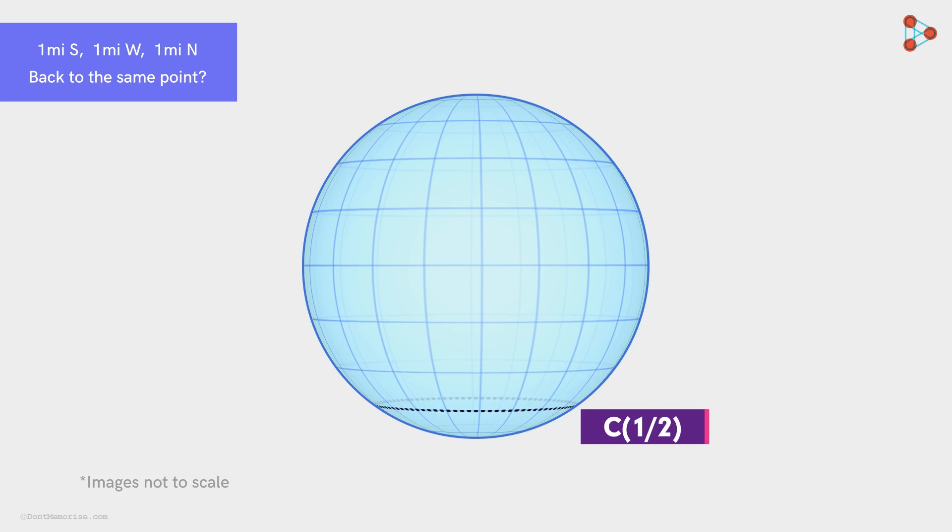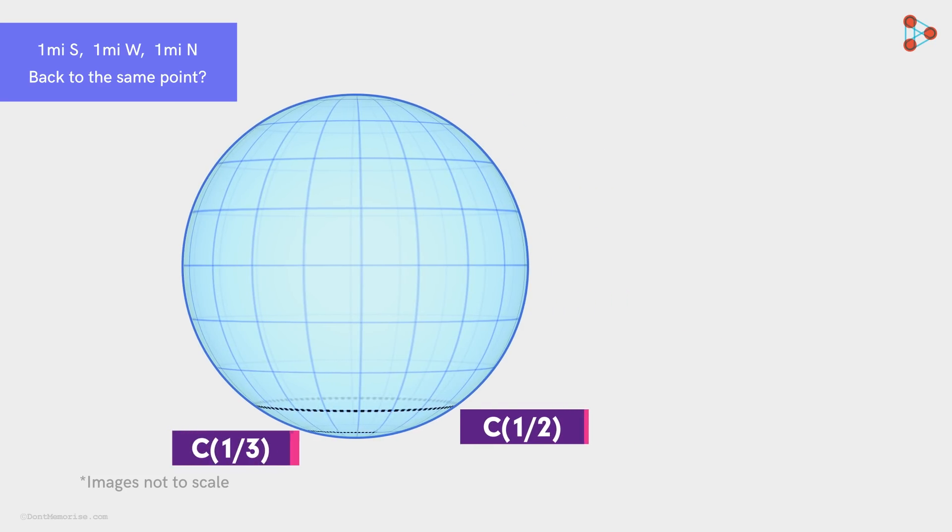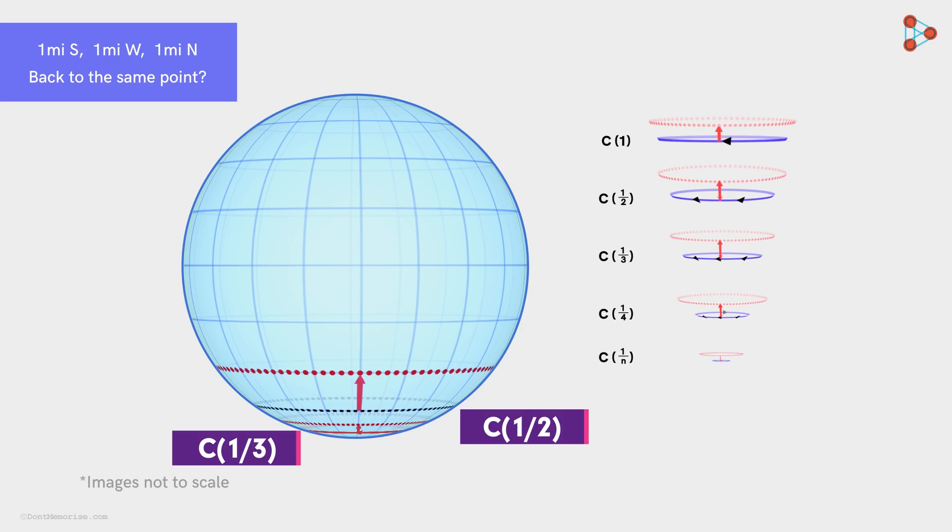So what does that tell us? It tells us that we can cancel the effect by travelling in three loops, four loops, and so on. So for the circles with circumference one over three miles, one over four miles, and so on up to one over n miles, we find infinite solution points one mile north of them. This completes our solution to the riddle.